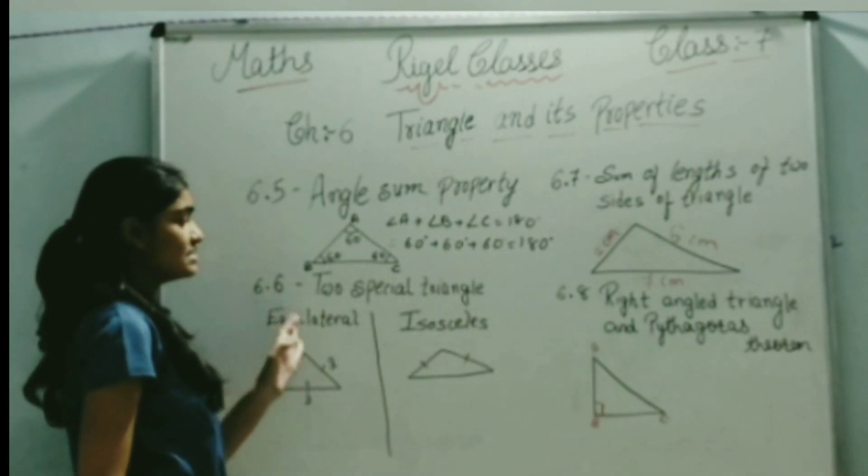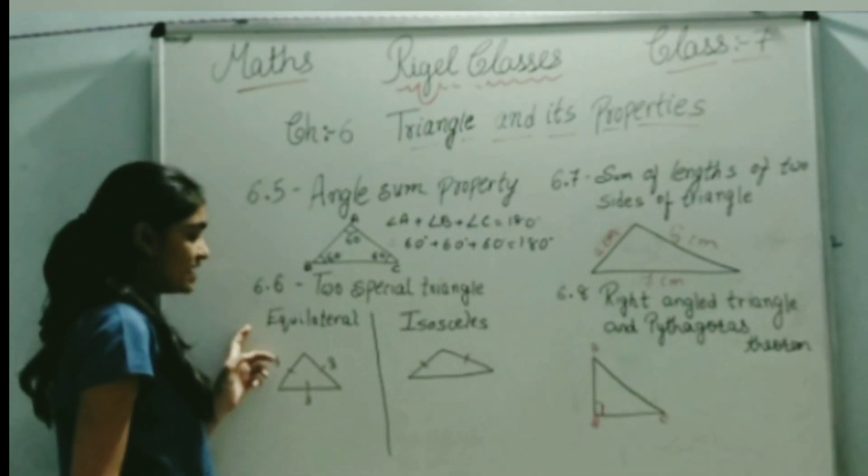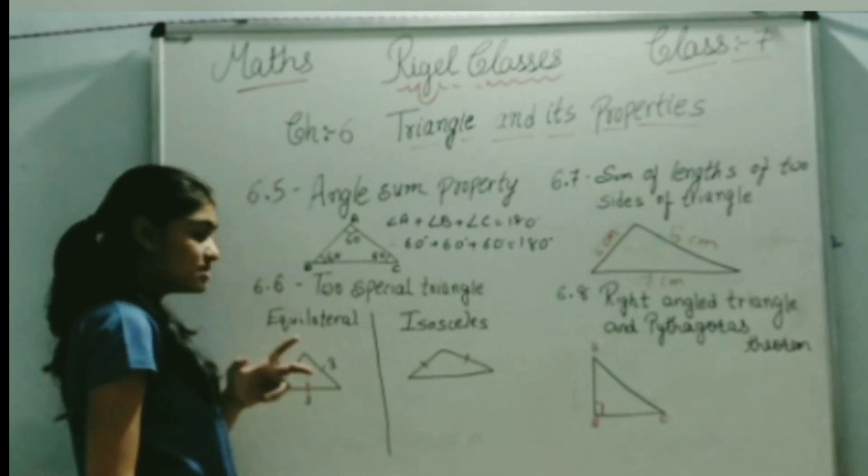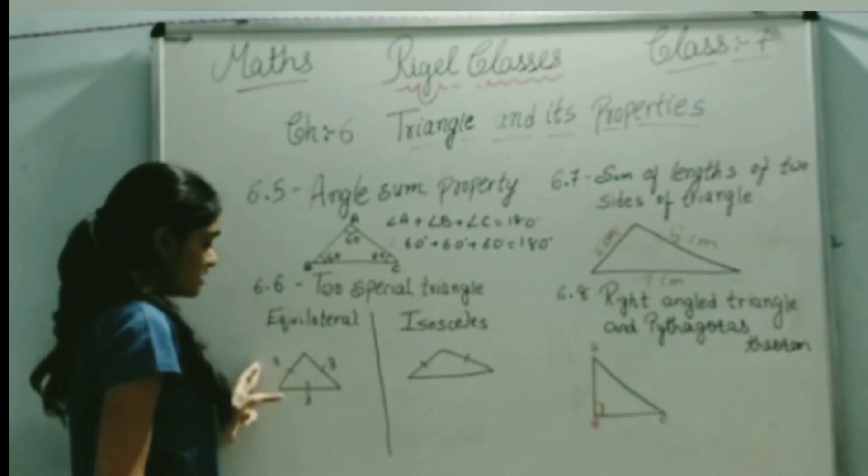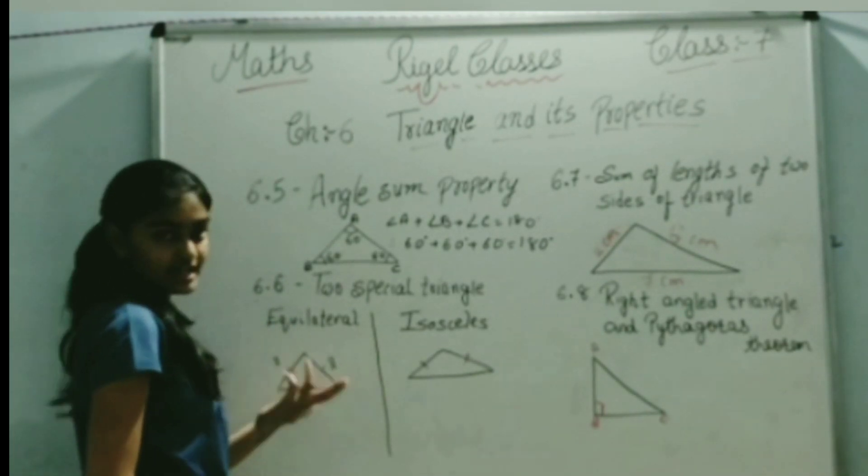Now next, we will see special types of triangles. Here we will see two types of triangles. First is the equilateral triangle. It has all sides the same. Here it has three centimeters. We can take any value.